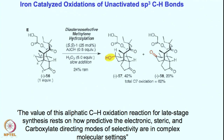In conclusion, the value of this aliphatic C-H hydroxylation or C-H oxidation reaction for late-stage synthesis rests on how predictive the electronic, steric, and carboxylate directing modes of selectivity are in complex molecular settings. In other words, the more complex the substrate, the better it is for the active species to do the chemistry selectively. With this we will come back again. Thank you very much.